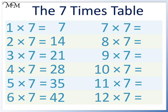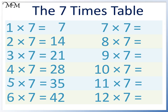When we multiply 7 by an odd number, the answer is odd. When we multiply 7 by an even number, the answer is even. We have odd, even, odd, even, odd, even.